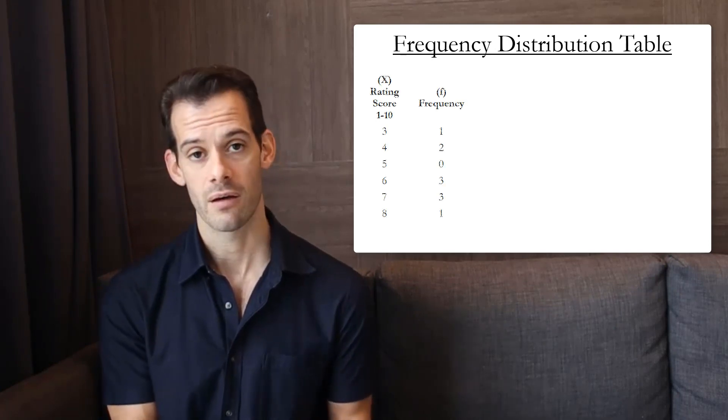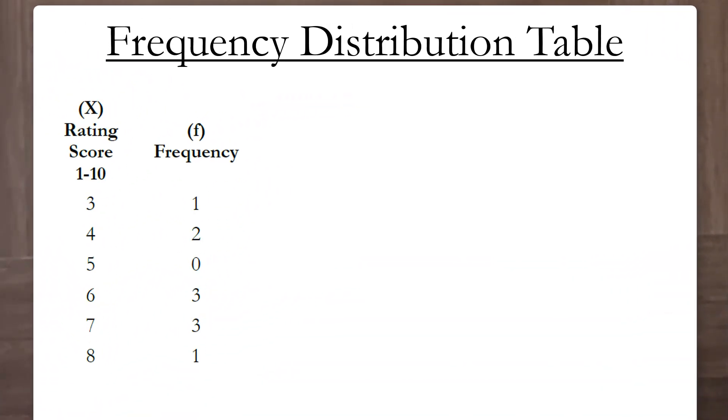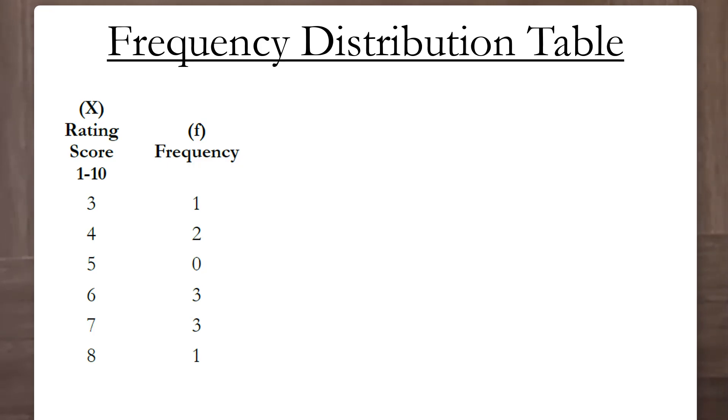So our first column will be labeled with the variable that we've measured, x, and the second column will be labeled frequency or f for how frequent each of those values were in our sample. So by reading across a row we can see the value for x and then how many of those scores we had.